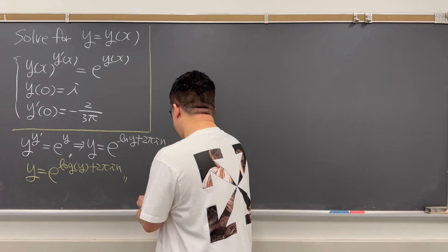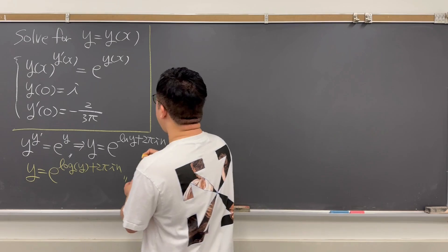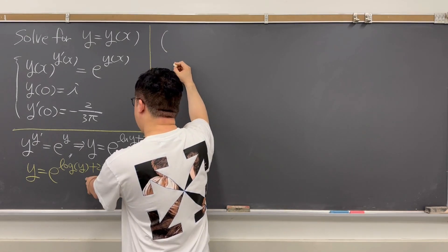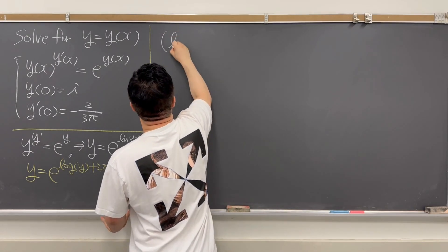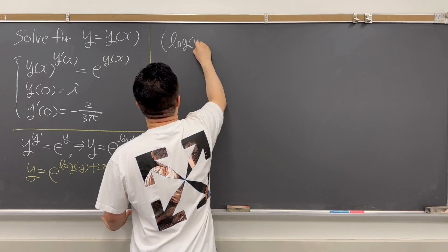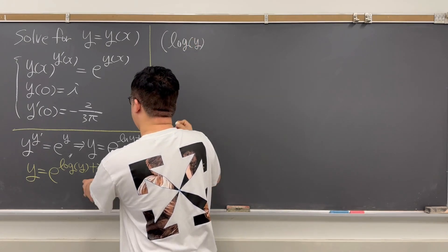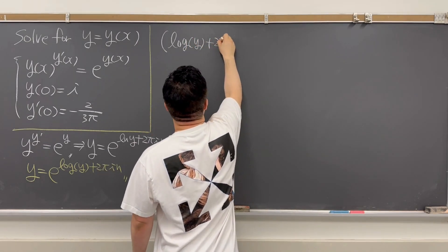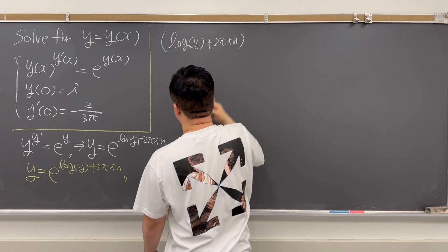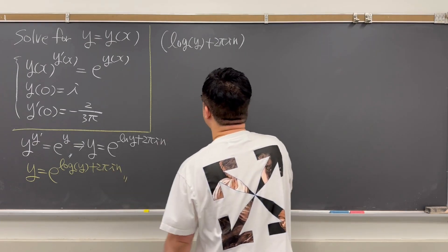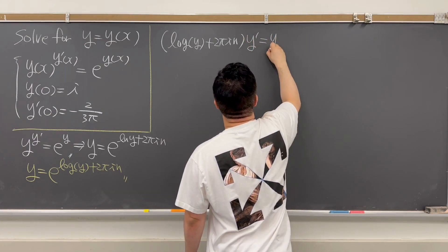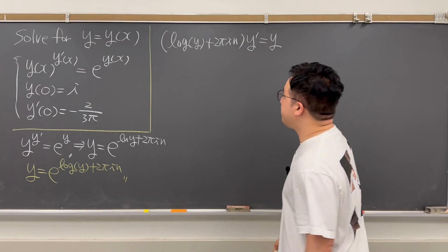The differential equation then becomes: (log(y) + 2πin) times y′ = y.